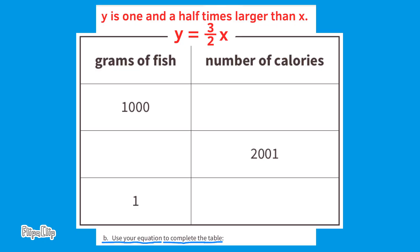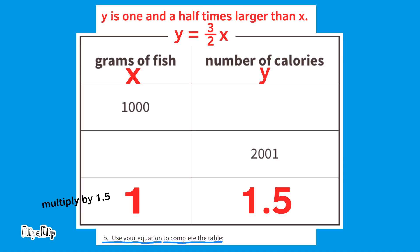Part B: use your equation to complete the table. The equation is y equals 1.5 times x, where x is grams of fish and y is number of calories. The number of calories is 1.5 times larger than the number of grams of fish. Starting with 1 gram of fish: 1.5 times 1 is 1.5. So 1 gram of fish has 1.5 calories.